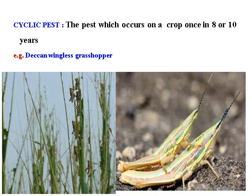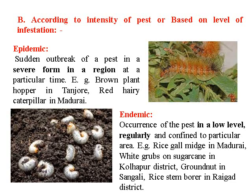Cyclic pest: the pest which occurs on the crop once in every eight or ten years. Now, according to the intensity of the pest or based on the level of infestation, there are further classifications. Epidemic: sudden outbreak of a pest in a severe form in a region at a particular time. For example, brown plant hopper in Tanjore district, Karnataka, and army caterpillar in Madurai.